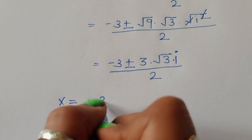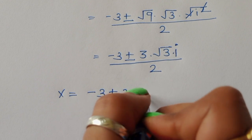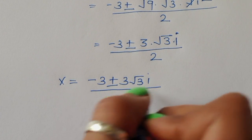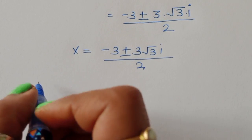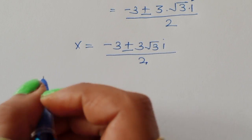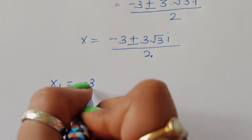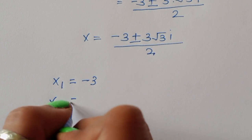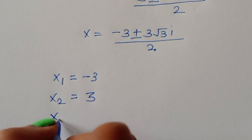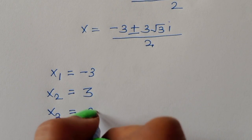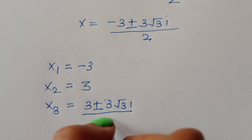In total we got four values of x: x₁ = -3, x₂ = 3, and x₃, x₄ = (±3 ± 3√3 i) / 2, combining both complex solutions.